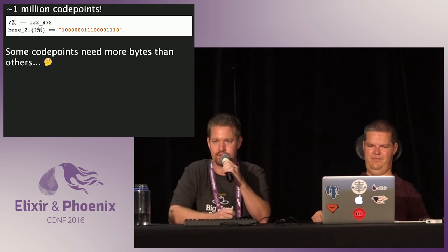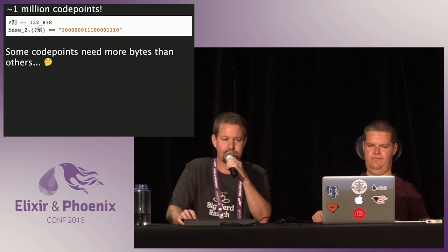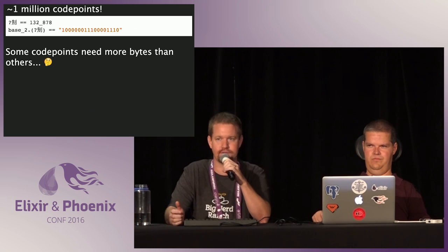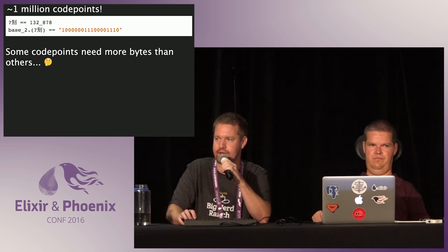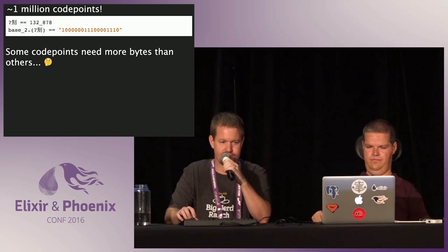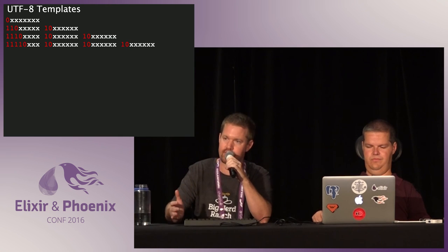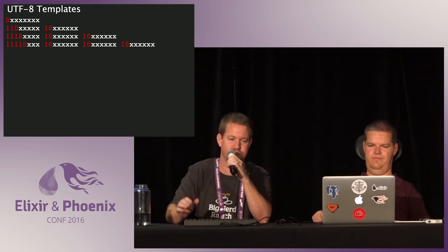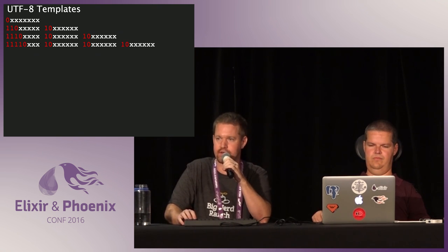There are a lot of code points in Unicode — somewhere around a million — and obviously they're not all going to fit in one byte. We could give all of them four bytes so we always know how long each code point is, but that's not great because the letter A would take up four bytes when it could have been one. So the going solution these days is called UTF-8. It's an encoding for Unicode: you take your code point and encode it into one of four templates — a one-byte template, a two-byte template, all the way up to the four-byte template. You take the binary that you need and slot it into the smallest template you can.